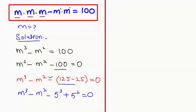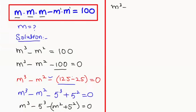Now I'm going to rearrange according to the power. Here I'm going to write m cubed minus 5 cubed, minus m squared, and this I'm going to write in a bracket: plus 5 squared, equals zero. So this turns to m cubed minus 5 cubed, minus m squared, and then minus plus, plus minus 5 squared equals zero.